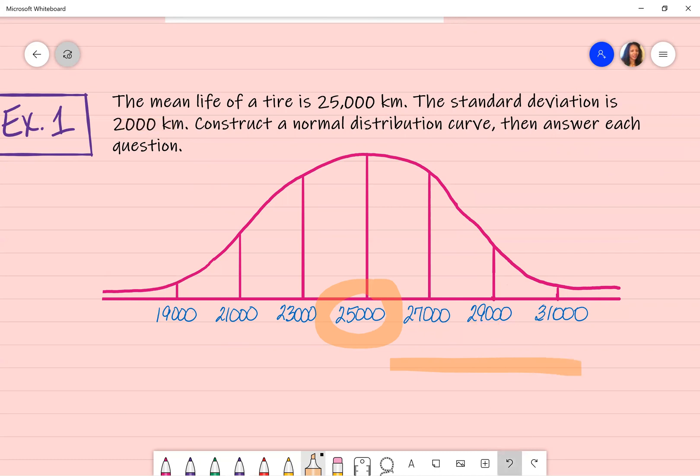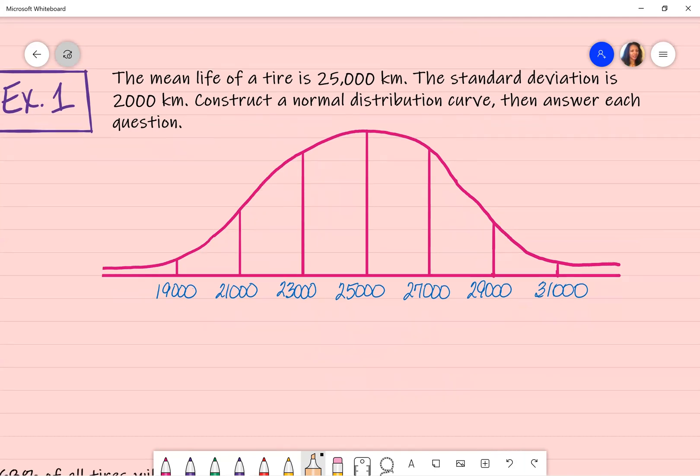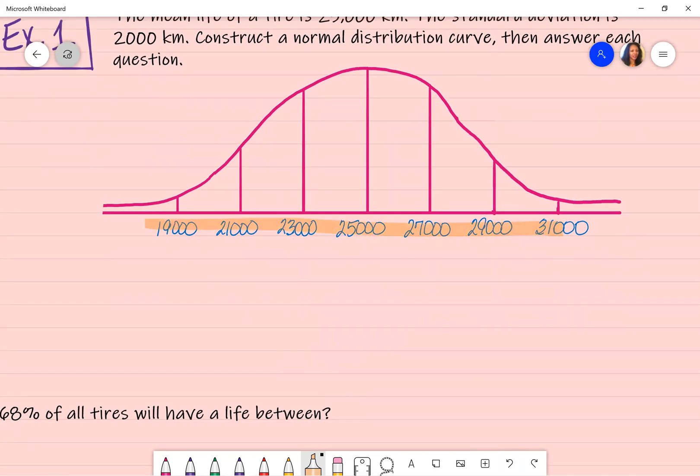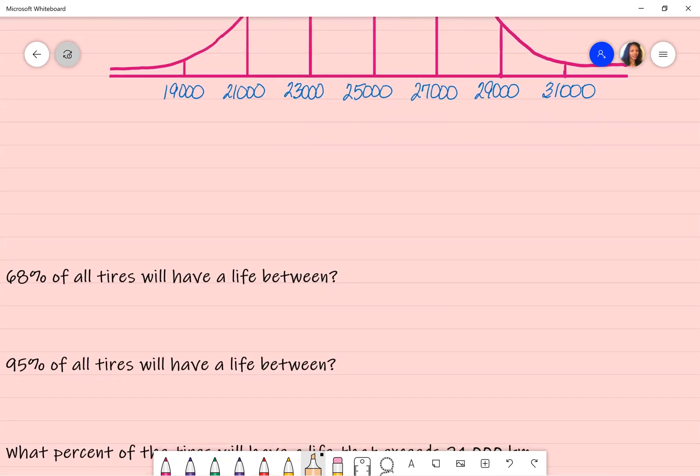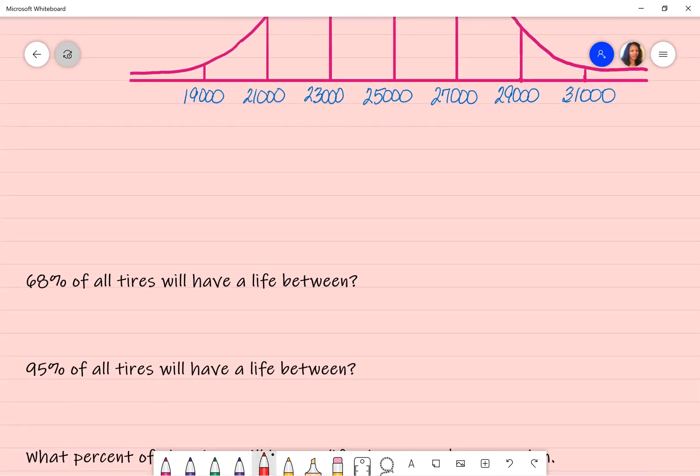When I am going in the opposite direction and I have my 2,000 still, this time I'm subtracting. So 25,000 minus 2,000 is where the 23,000 is coming from and take 2,000 from that. That's where that 21,000 is coming from. So on and so forth. Again, you want to go three standard deviations in both directions. You also want to make sure that your information is correct because this is what you're using to answer these questions down here.